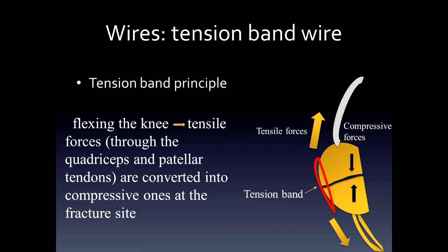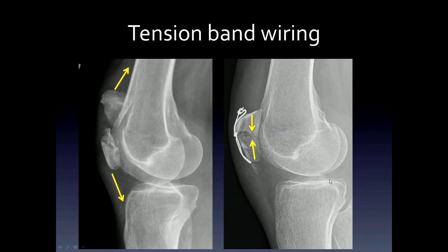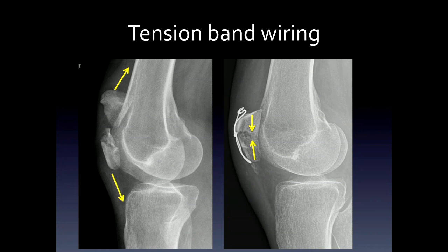Using this eccentric anterior wire, these forces are converted to compression forces at the fracture site. The tension forces pulling the knee apart are reduced by the tension band, allowing compression at the fracture — so you expect this tension band to be on the tensile side. Here's an example of a patellar fracture: the arrows indicate the pull that separates the fracture fragments, and on the right, the eccentrically placed, anteriorly placed tension band serves to produce compression forces more posteriorly.